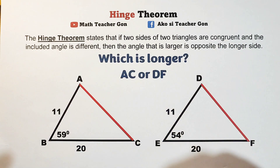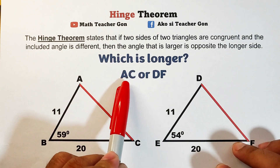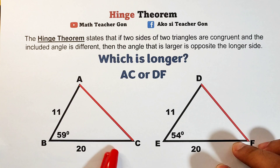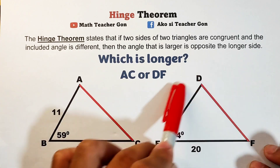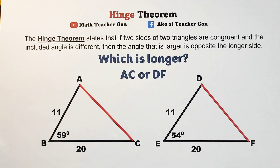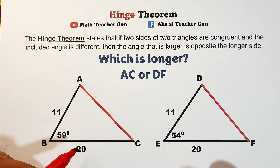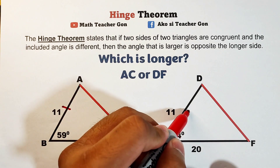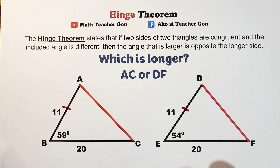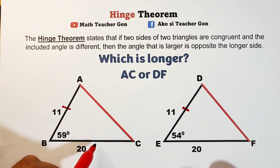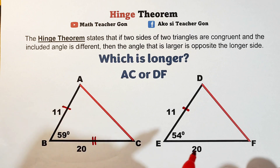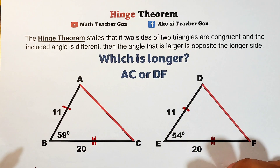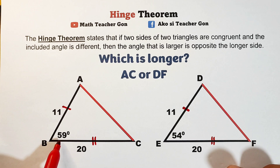The question in this video is: which is longer, AC or DF? In this triangle, this is your side AC, and in this triangle, this is your side DF. Based on the Hinge Theorem, these two triangles have two pairs of congruent sides. Here, AB is congruent to DE — they both measure 11 units — while BC, which is 20 units, is congruent to EF on the other triangle.